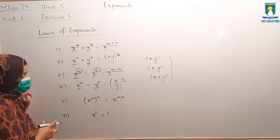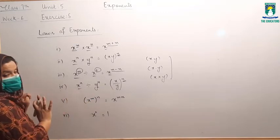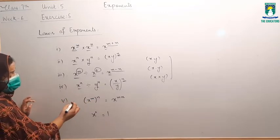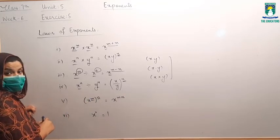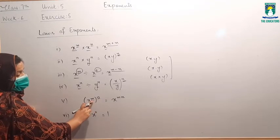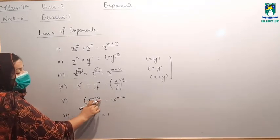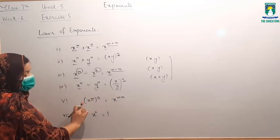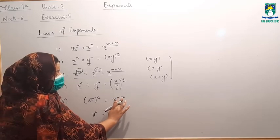Fifth law: x raised to power m, whole raised to power n. अगर bracket के अंदर भी exponent हो और outside the bracket भी exponent हो, इसका मतलब power की power है. Power की power हो तो वो multiply होती है. So x raised to power m, whole raised to power n, will be equal to x raised to power m×n.